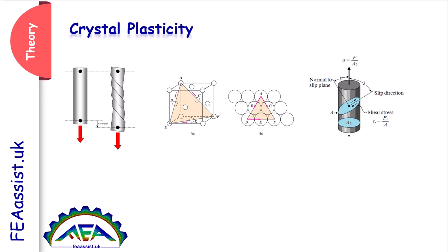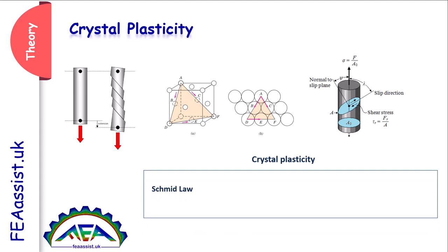We call this resolved shear stress. In some specific metals named FCC metals, the maximum resolved shear stress is in the planes of maximum atomic density. So these atomic planes start to move, and we call these planes and directions slip systems.